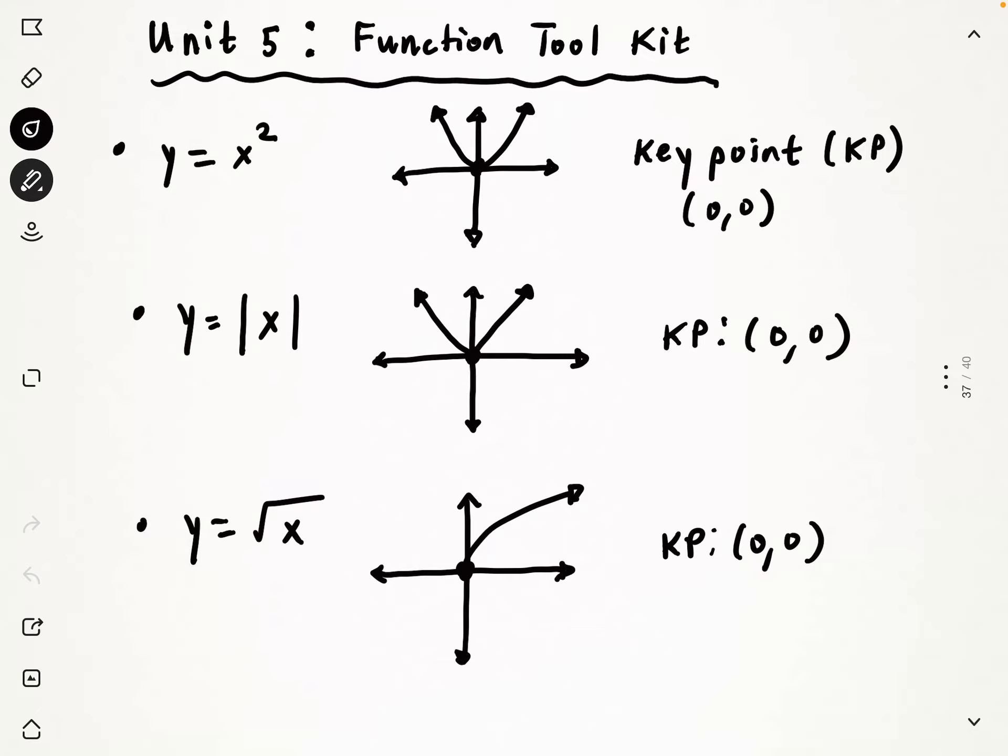And then also we have something that's a little more recent, the square root of x function that goes up and to the right, still has a key point of (0,0). You learned that graph in 12A most recently. So what we're going to do is we're going to be graphing transformations of each of these functions right here, and these are things that you've already learned to graph in other courses, so it's kind of like a review.